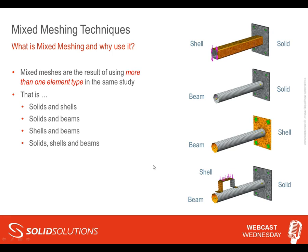We can mix solid, shell, and beams all together. The plate at the back can be solid, a bent sheet metal bracket can be a shell, and the structural member can be a beam. The software has defaults: sheet metal or surface geometry automatically becomes shell elements, and weldments automatically become beams. You can reverse these defaults by right-clicking and selecting 'treat as solid', but those defaults are useful because thin sheet metal and weldments often benefit from shell and beam representations.